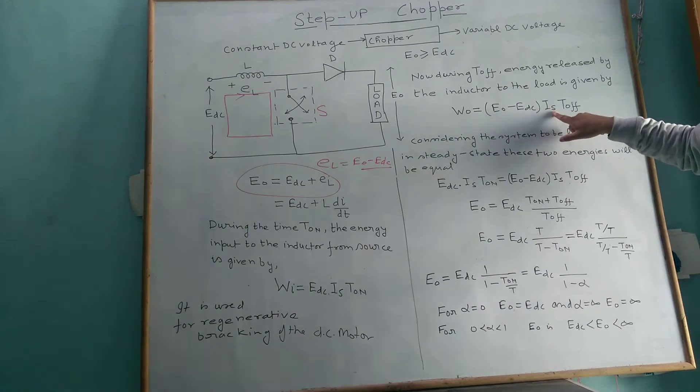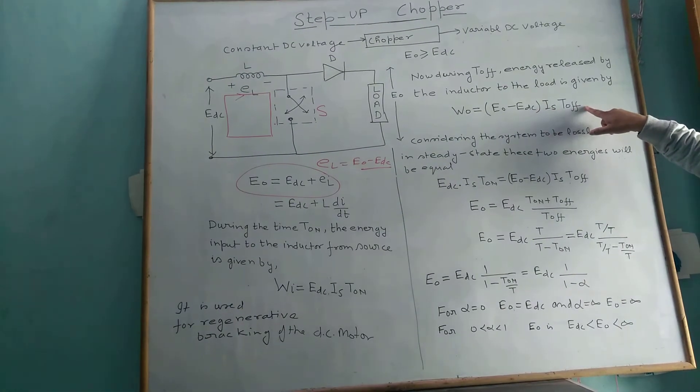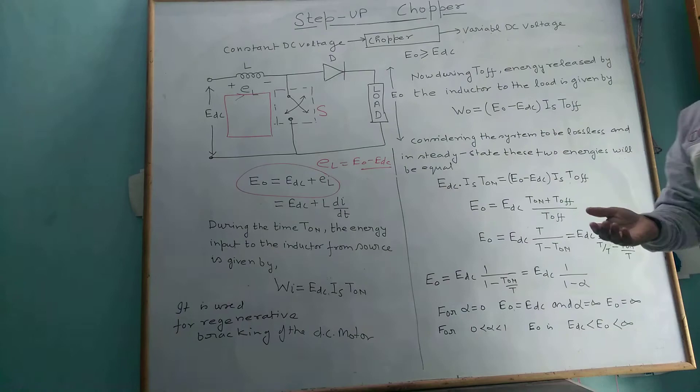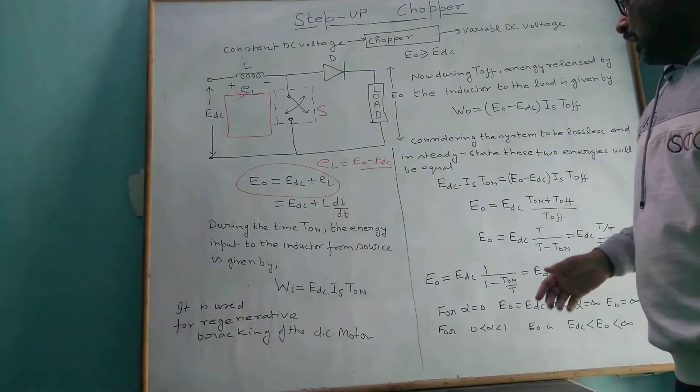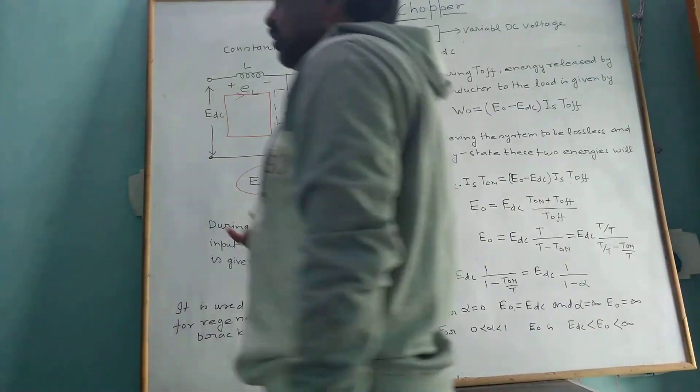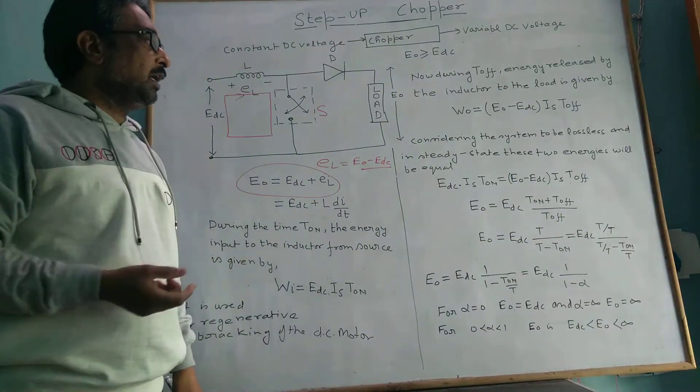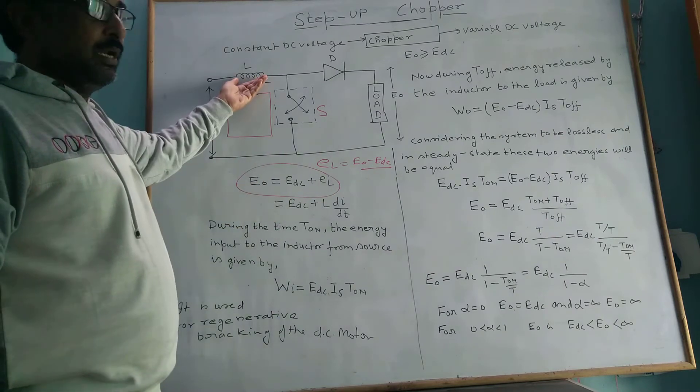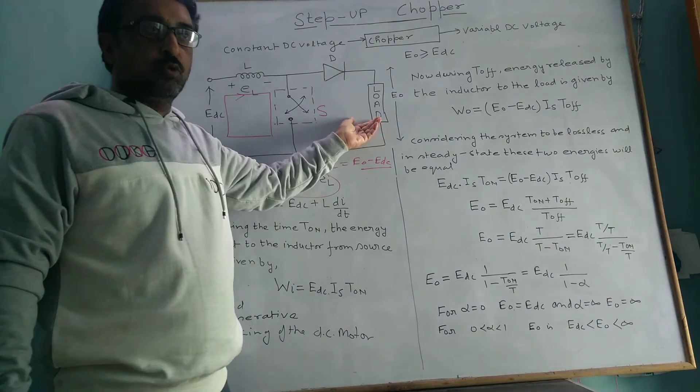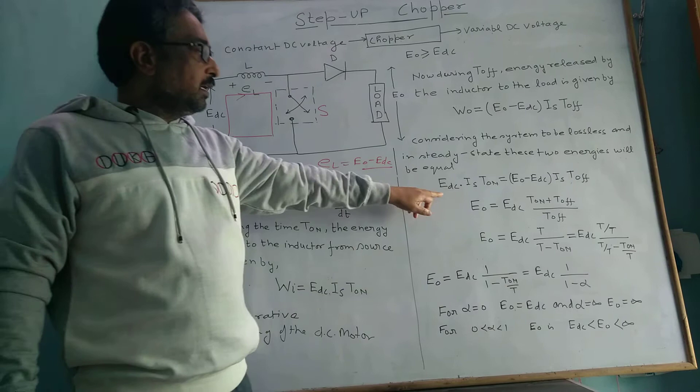As much as the inductor charged, that much it discharged. If there is no loss component in our circuit, then the input that the inductor received and what was supplied to the load will be equal. In this condition, W_in equals W₀.